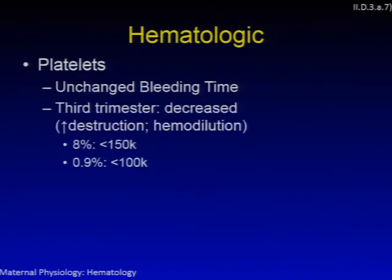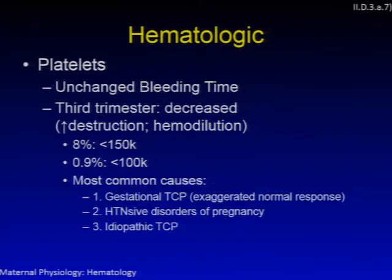Platelet count decreases during the third trimester due to increased destruction and hemodilution. About 8% of women will have a platelet count less than 150 in their third trimester, while 0.9% will have a count less than 100. Common etiologies include: gestational thrombocytopenia — an exaggerated normal response of platelet destruction and hemodilution — hypertensive disorders of pregnancy, and idiopathic thrombocytopenia.